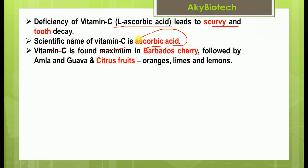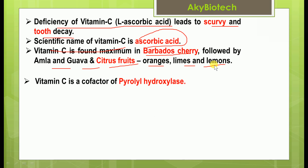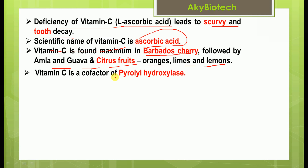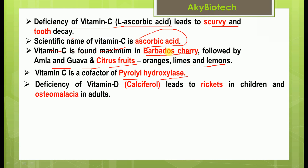The scientific name of vitamin C is ascorbic acid. Vitamin C is found maximum in Barbados cherry, followed by amla, guava, and citrus fruits like oranges, limes, and lemons. Vitamin C is a co-factor of prolyl hydroxylase. Deficiency of vitamin D (calciferol) leads to rickets in children and osteomalacia in adults.